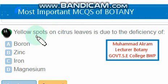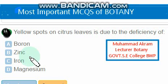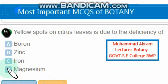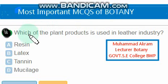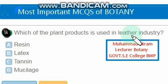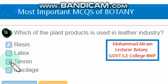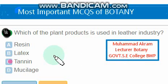Yellow spots on citrus leaves are due to deficiency of boron, zinc, iron, or magnesium. The right option is option D, magnesium — due to its deficiency, yellow spots appear on citrus leaves. Which plant product is used in the leather industry? Tannin is the plant product used in the leather industry — option C is correct.